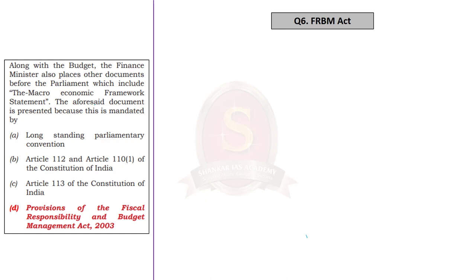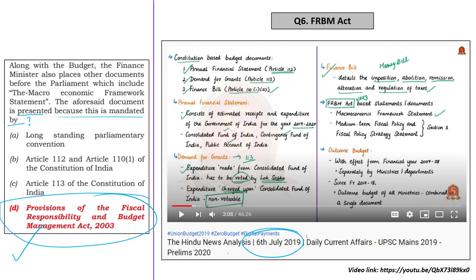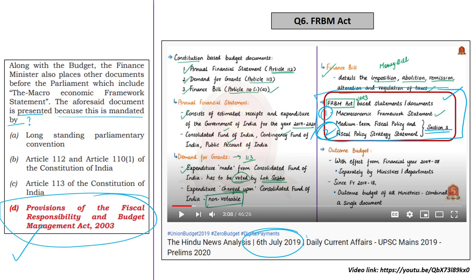The sixth question in Set A is with reference to the macroeconomic framework statement. The question asks: the document is presented because it is mandated by which of the following? The correct answer is provisions of the Fiscal Responsibility and Budget Management Act of 2003 — that is, the FRBM Act of 2003. On 6th July 2019 in the News Analysis, we stated that as part of the budget, two important statements are laid before Parliament based on the provisions of the FRBM Act: the macroeconomic framework statement and the medium-term fiscal policy and fiscal policy strategy statement. These two statements are presented to Parliament based on Section 3 of the FRBM Act of 2003. So you can easily arrive at the correct answer, which is Option D.